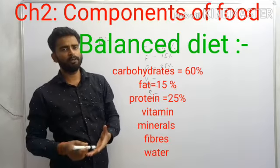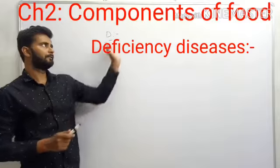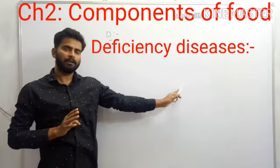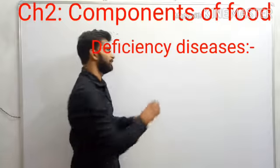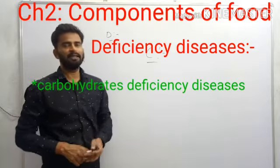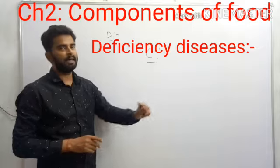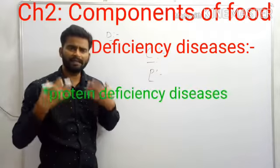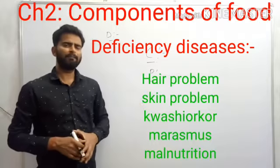Now we study deficiency diseases — what happens if we do not take adequate amounts of nutrients. If we don't take adequate carbohydrates, we face carbohydrate deficiency diseases like lack of stamina, weakness, and lack of strength. If we don't take adequate protein, we face discoloration of hair, rough skin, diarrhea, and loss of stamina.